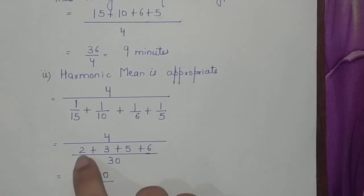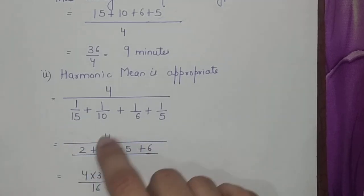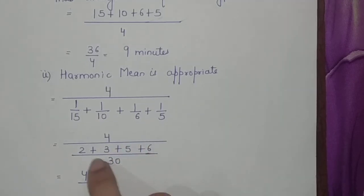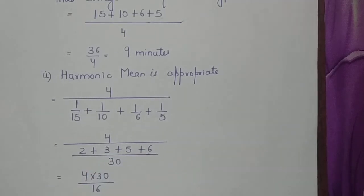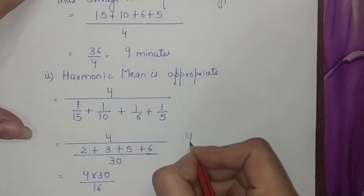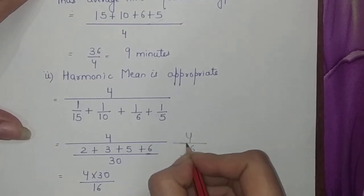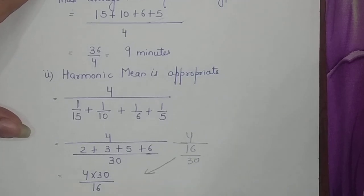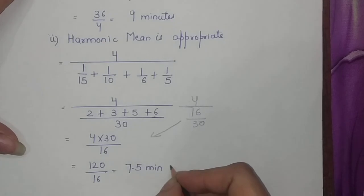Then we will solve it: 2 plus 3 plus 5 plus 6. 15 twos are 30, 10 threes are 30, 6 fives are 30, 5 sixes are 30. Then we will add them up, you will get 16. So 4 upon 16 by 30 will become 4 into 30 by 16, so it will be 120 by 16 equal to 7.5 minutes on an average.